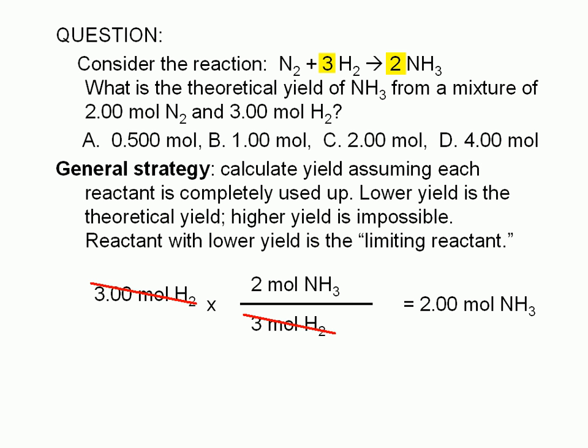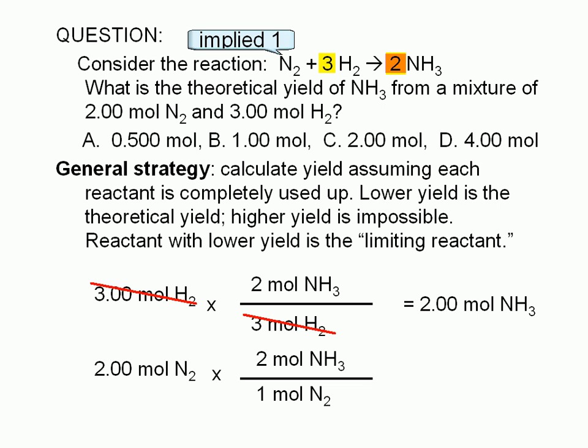Similarly, we can calculate the amount of ammonia that would be produced from 2.00 mols of nitrogen. 2.00 mols of nitrogen times a conversion factor based on the coefficients in the balanced equation. The coefficient of ammonia is 2, the coefficient of nitrogen is 1. We find that the amount of ammonia produced from 2.00 mols of N2 is 4.00 mols.